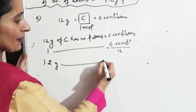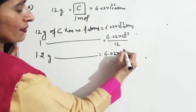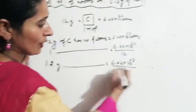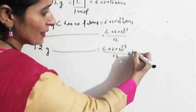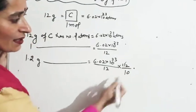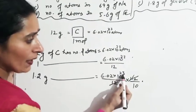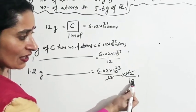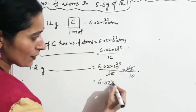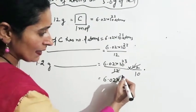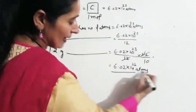कितने में पूछा है? 1.2 gram के अंदर. तो 6.02 × 10²³ upon 12, multiplied by 1.2. यह देखें — decimal हटाया, नीचे 10 लगा दिया. 12 के साथ 12 cancel हो गया. ऊपर है 23 और एक 10 नीचे, यह ऊपर जाके minus हो जाएगा. तो answer क्या है? 6.02 × 10²² atoms.